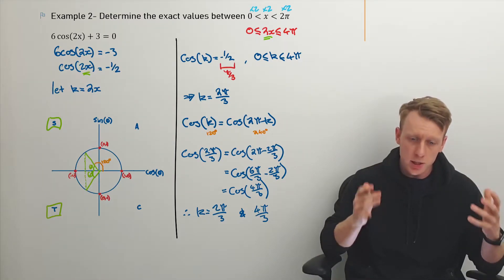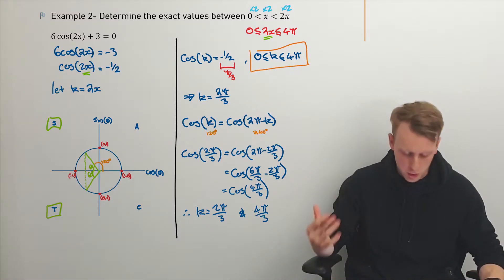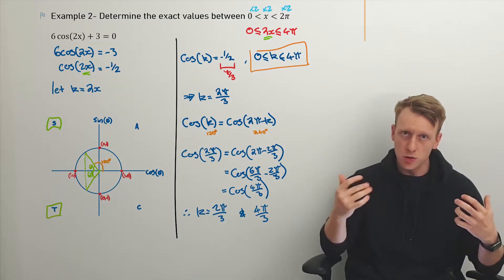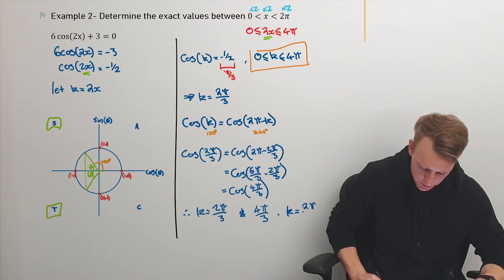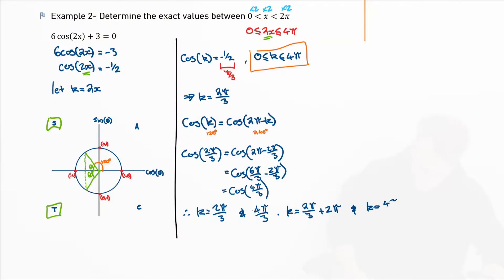That's within one rotation of the unit circle, but our domain goes up to 4π — that's two rotations. So we're going to have the same set of solutions plus 2π. We're also going to have k equal to 2π/3 plus 2π, and k equal to 4π/3 plus 2π, because we're just doing another rotation to fit our solutions within the domain between 0 and 4π.